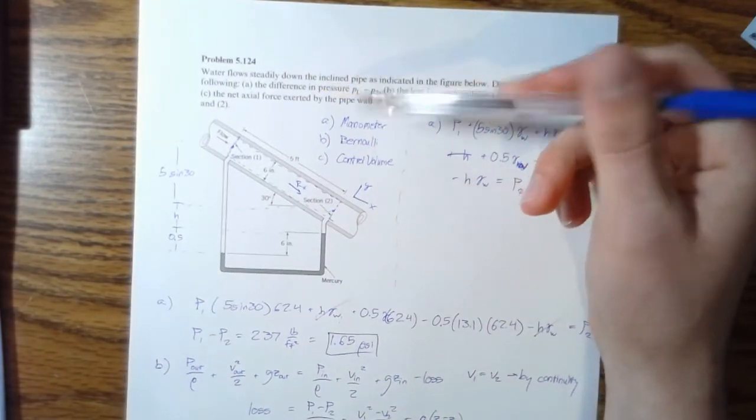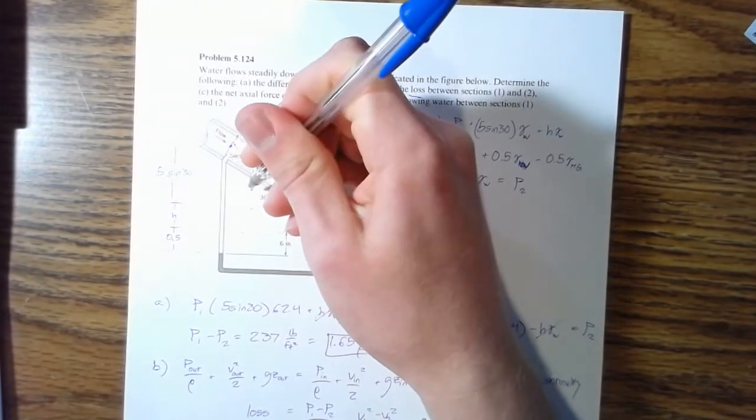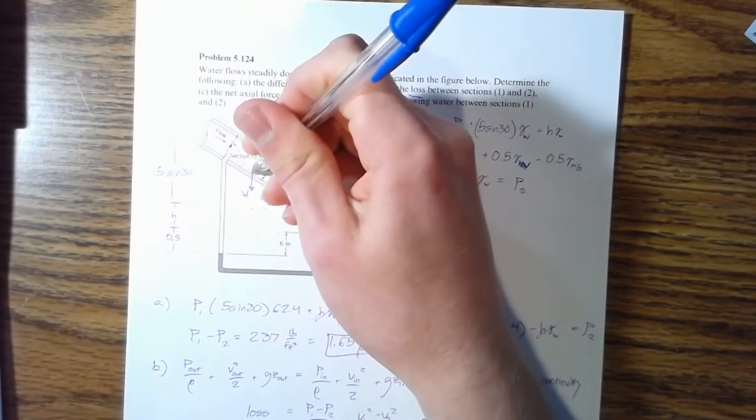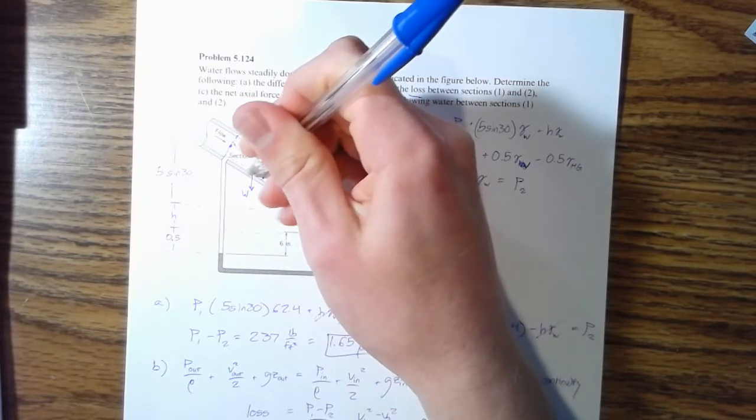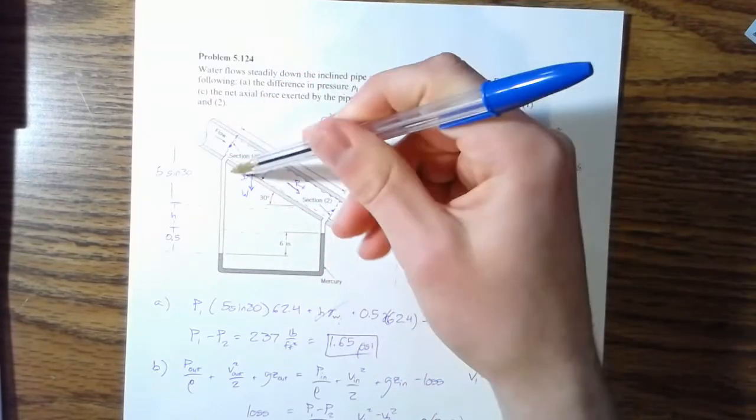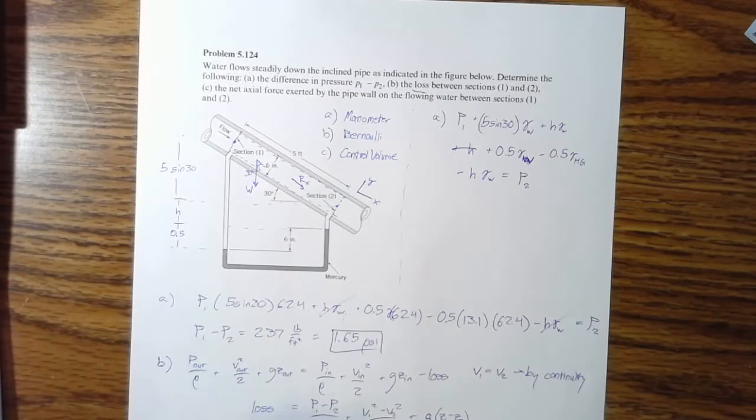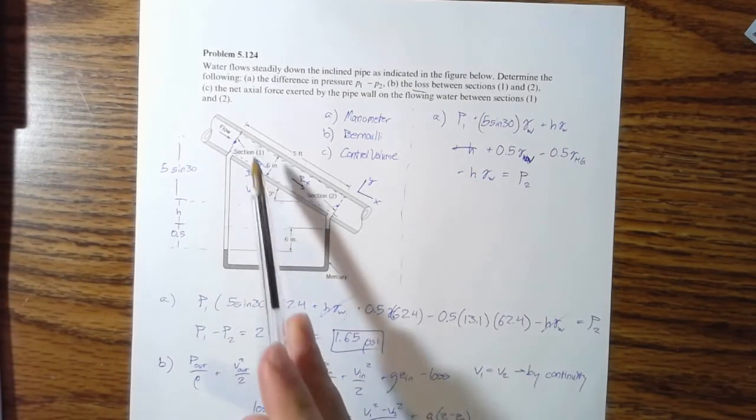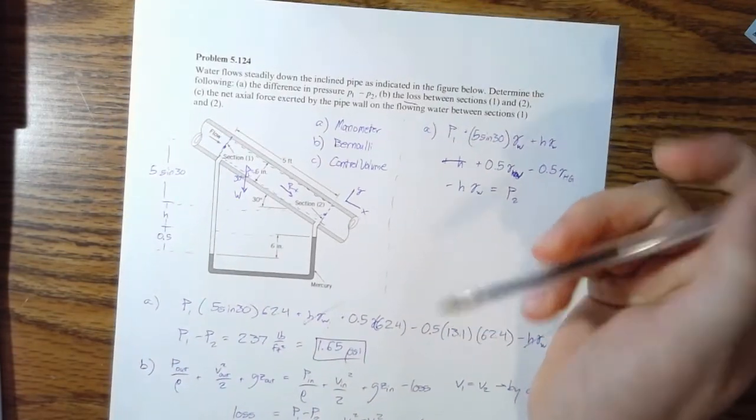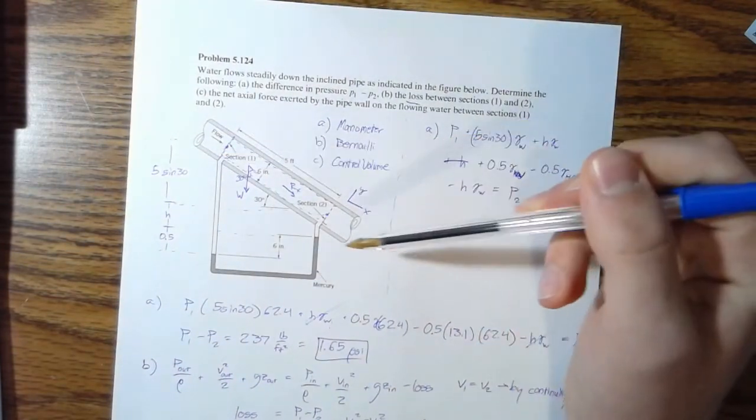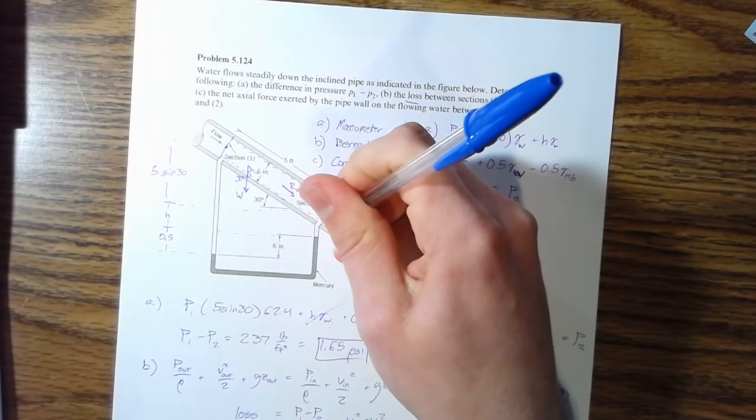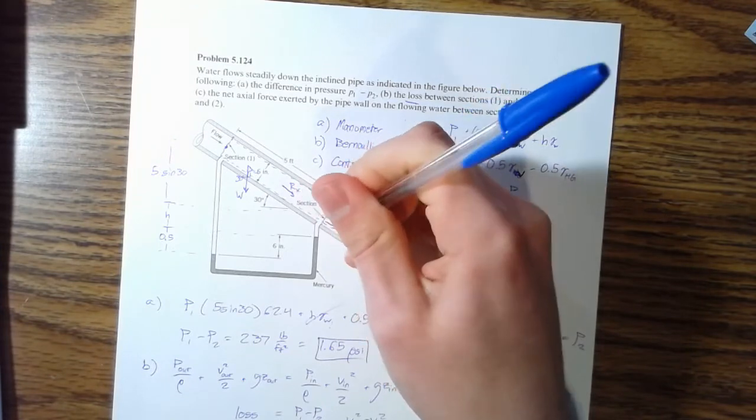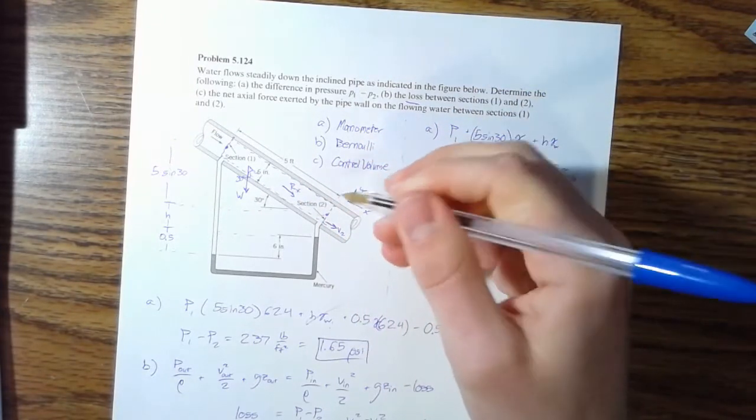And then since this is a vertical pipe, right? It's flowing steadily down. We're also going to have a weight called that W. And that is at an angle of 30 degrees with this inclined surface that we have here. So that's all of the forces going on kind of on the inside.